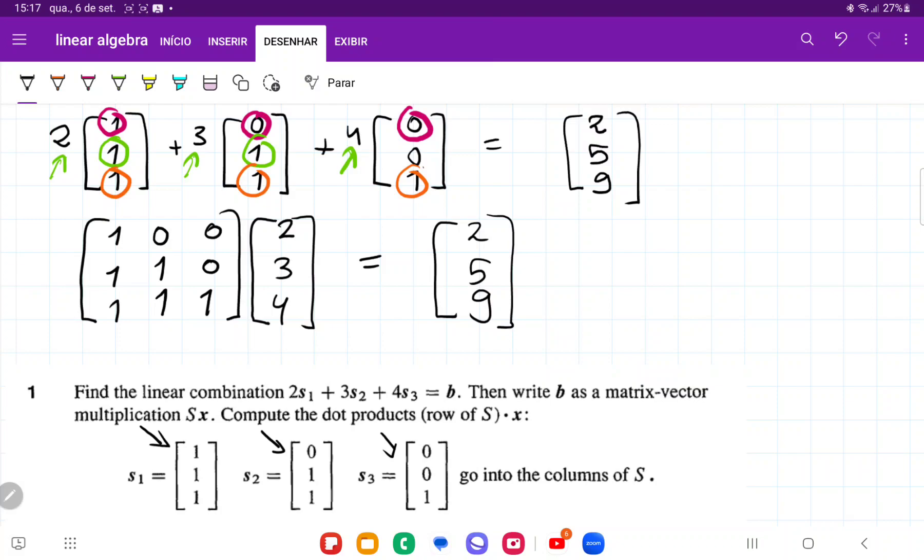Now it's asking us to double check by computing the dot products of row S times x. When we compute the dot product, we take the first element times the first element plus the second times the second plus the third times the third. So we have 2 times 1 plus 3 times 0 plus 4 times 0, which is 2. This checks out.